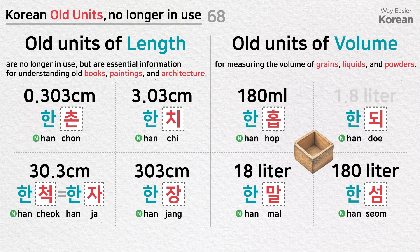Continuing old Korean units of volume: 18 L = 한 말; 180 L = 한 섬.